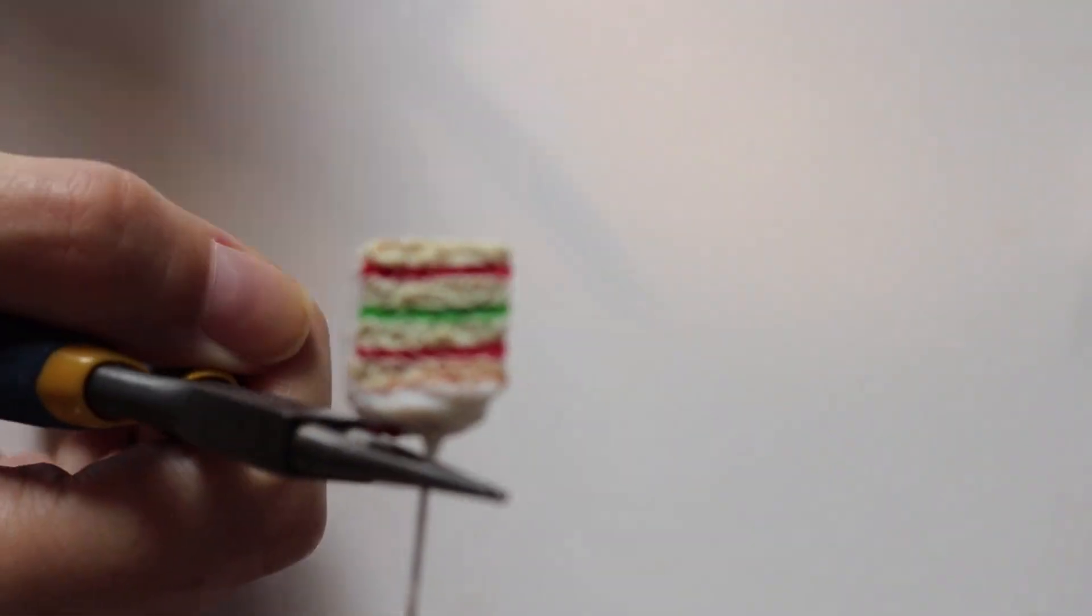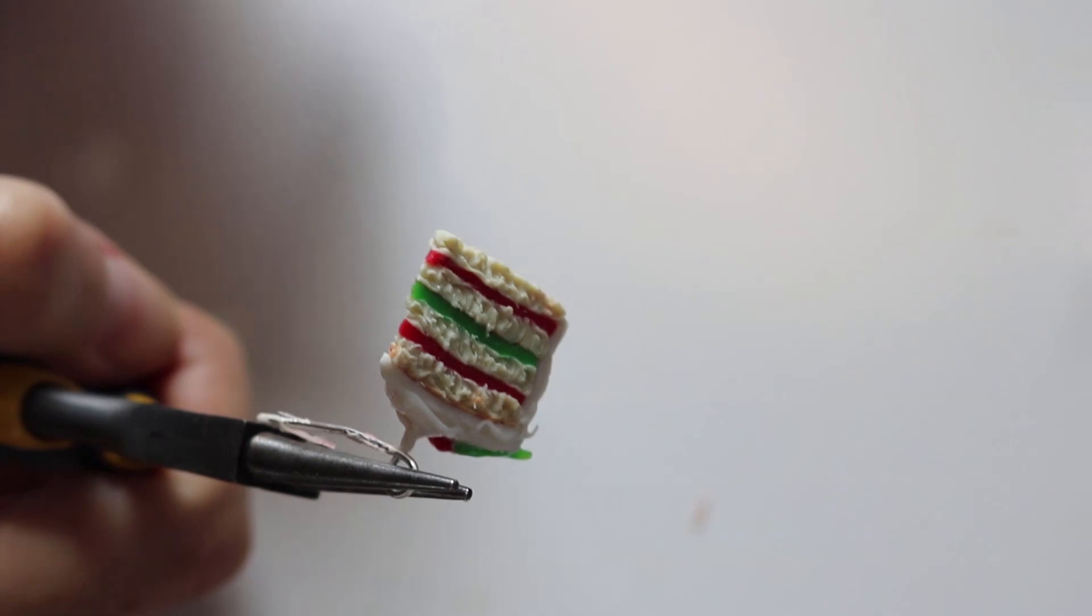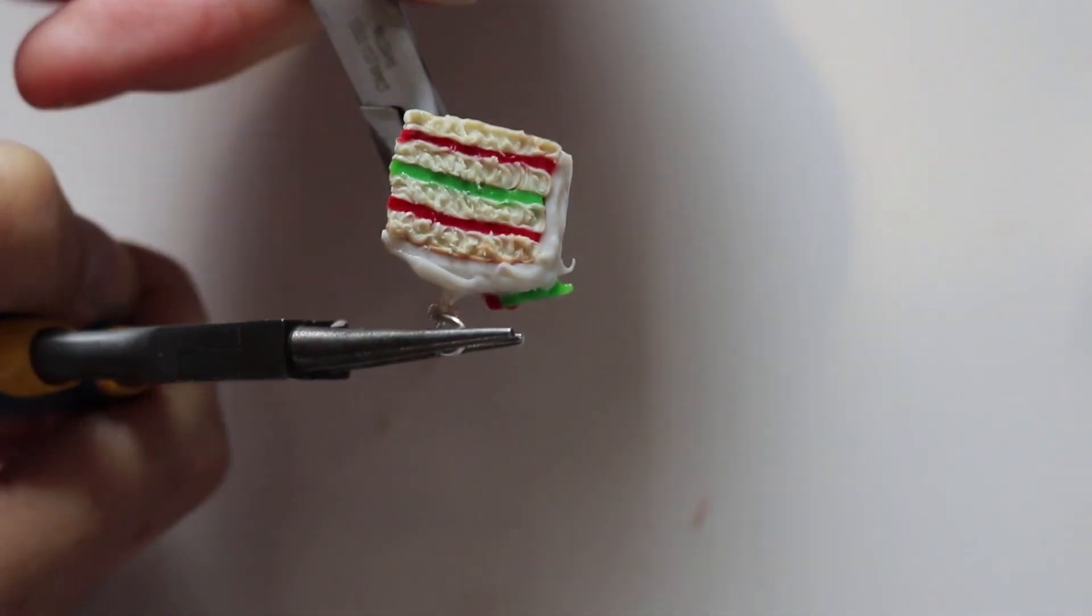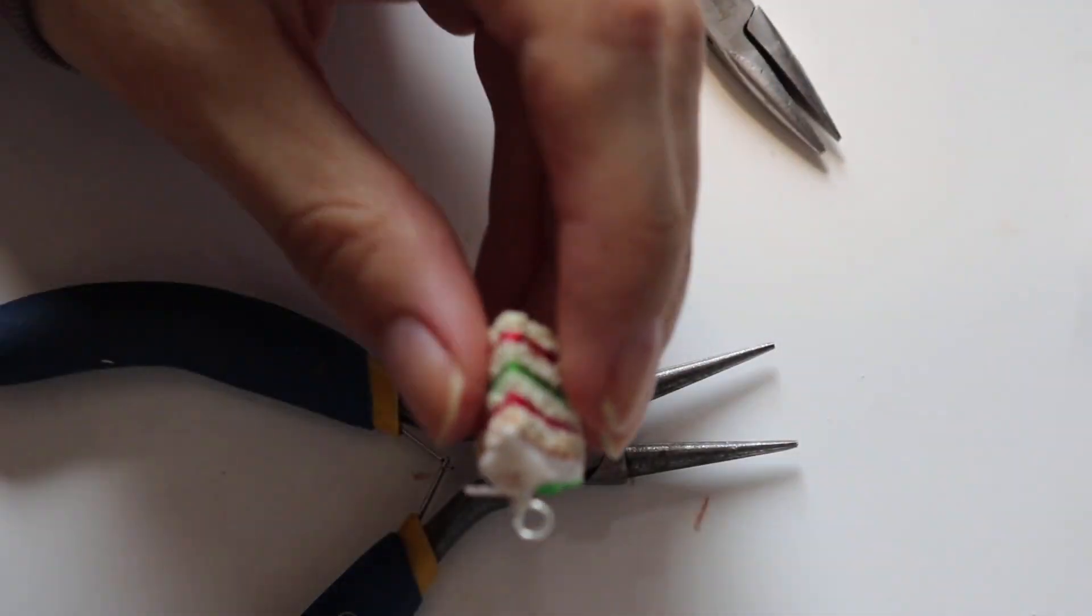And then from there, we're going to be making it into an earring. So I'm using two of my favorite pliers, the round head and the flat. And then I'm just looping it around, and then just after you've done that, loop the rest of it. And then use some nail clippers to cut off the excess.